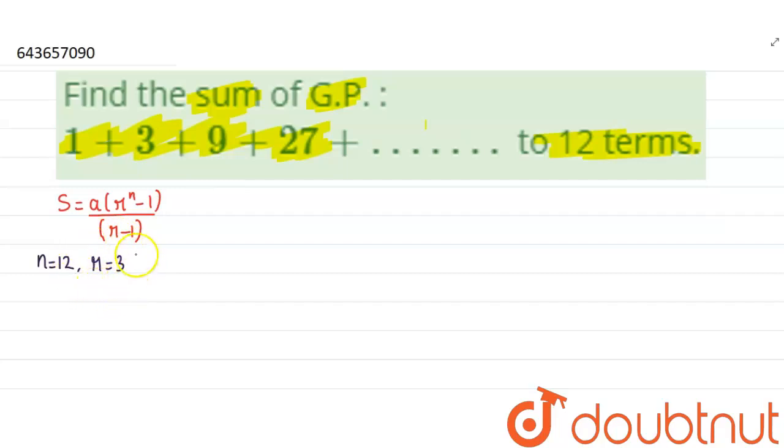So here the common ratio is 3. Now the first term is 1. You can clearly see that the first term is 1.